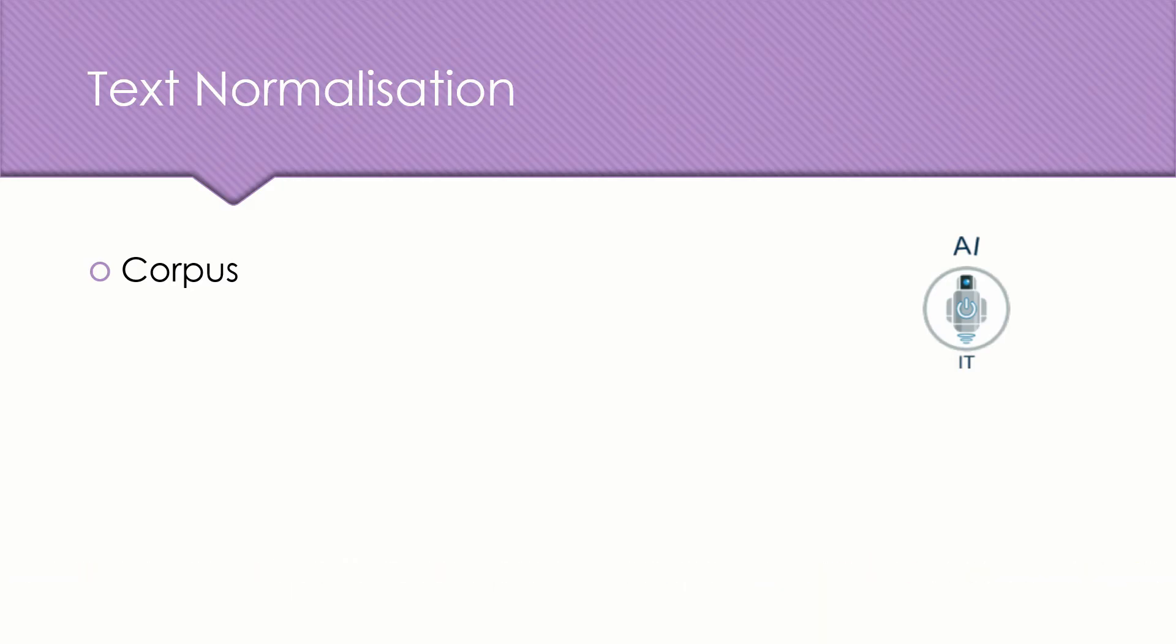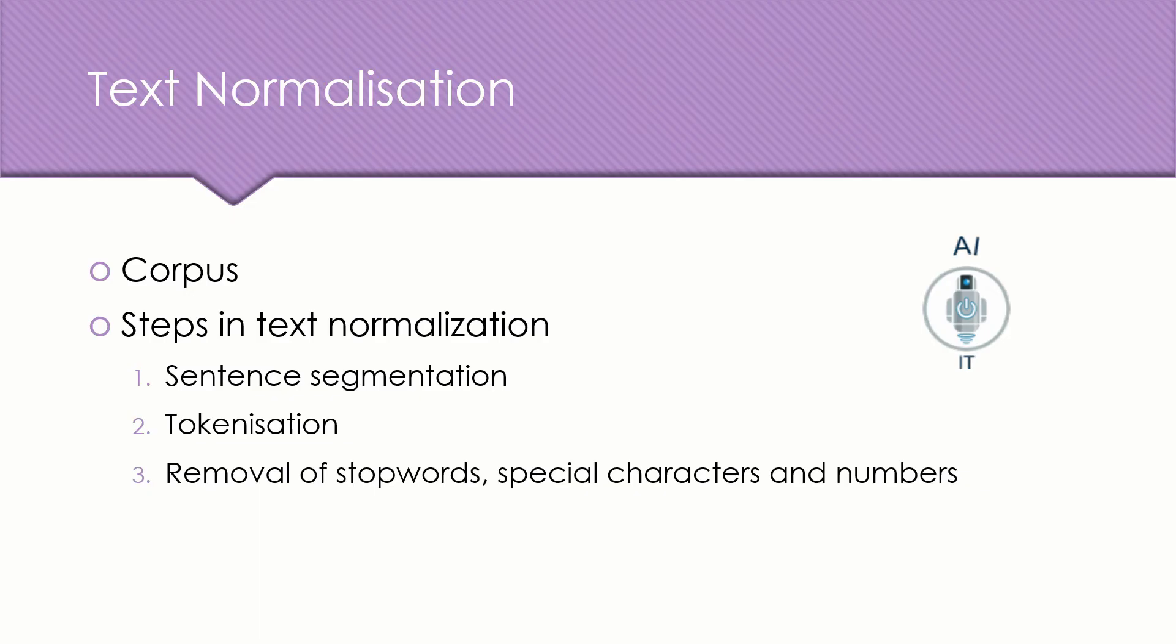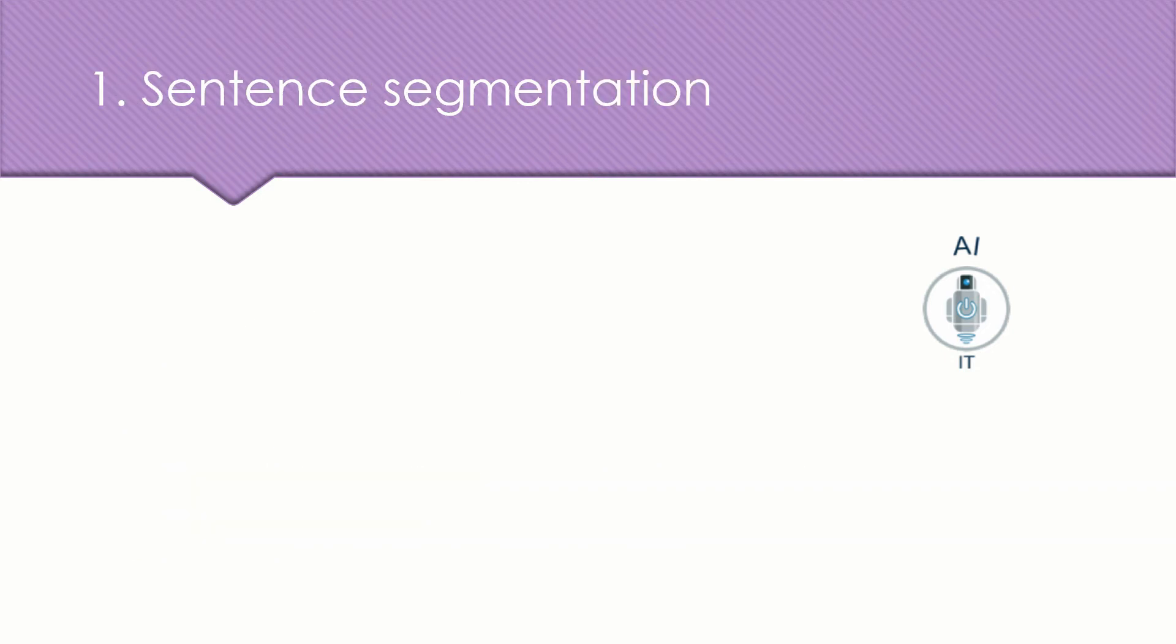Now, there are five steps in text normalization and they are sentence segmentation, tokenization, removal of stop words, special characters and numbers, converting text to a common case, and finally the process of stemming or lemmatization. Let us look into each one of this in detail.